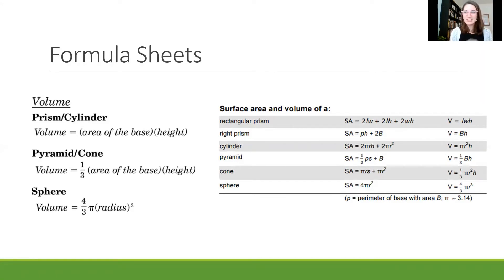But the focus here is to look at the volume sections. So you'll see the volume on the HiSET they give you a prism, cylinder, pyramid, cone, and sphere. And these are more simplified, so they apply to more things.